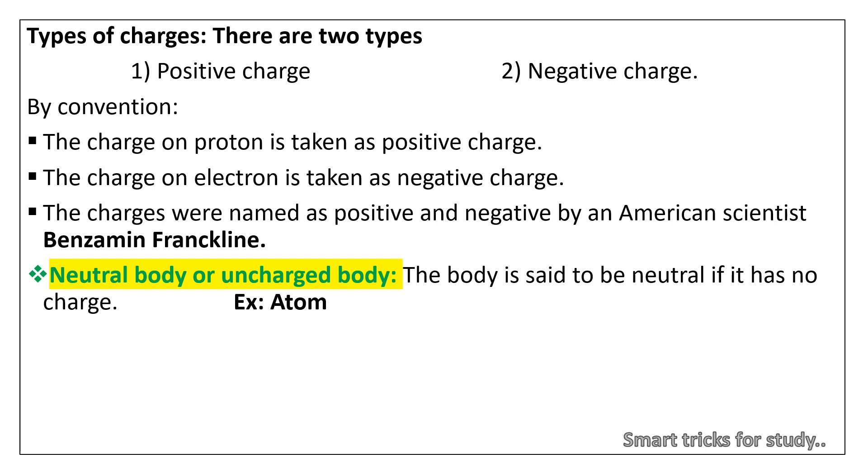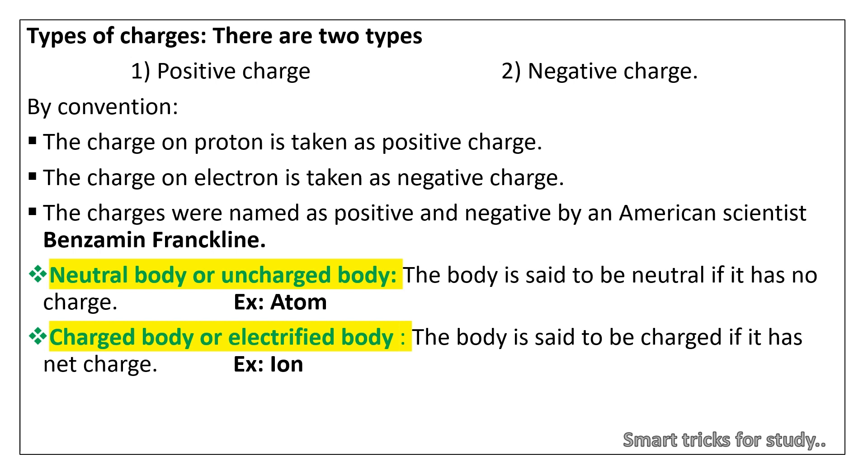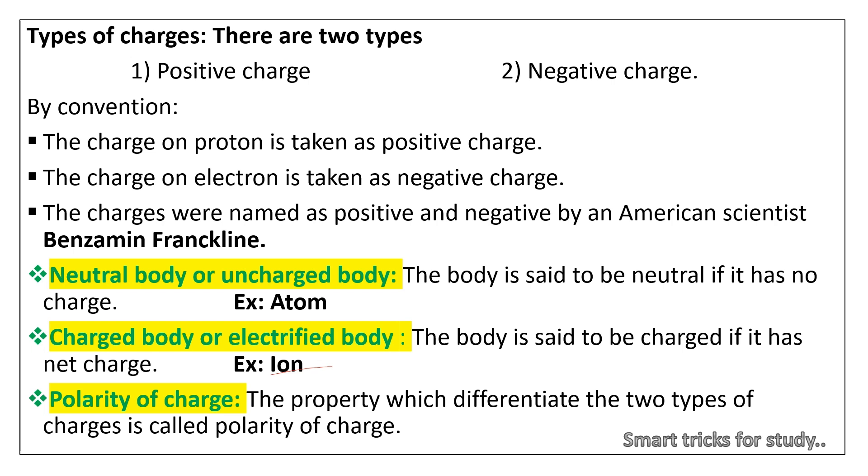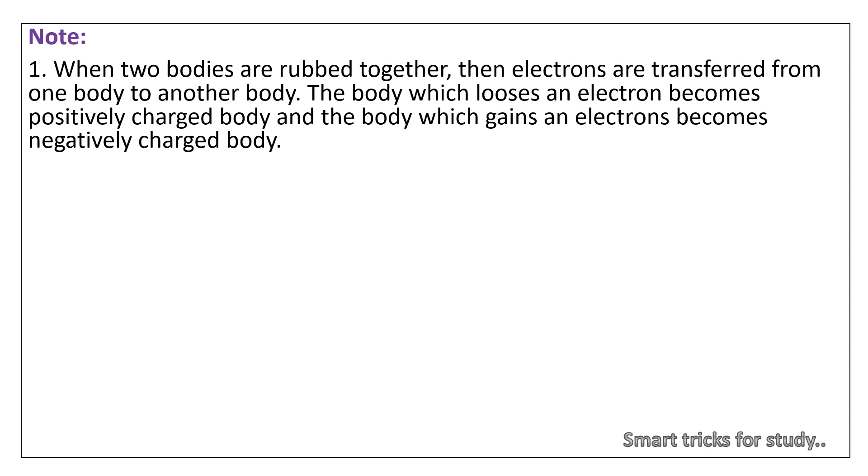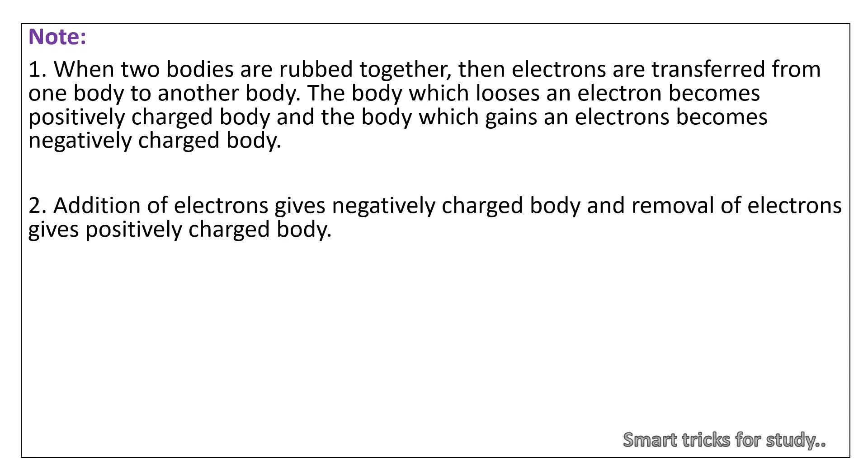Neutral body or uncharged body: the body is said to be neutral if it has no charge, example: atom. Charged body or electrified body: the body is said to be charged if it has net charge, example: ion. Polarity of charge: the property which differentiates the two types of charges is called polarity of charge. Note: When two bodies are rubbed together, then electrons are transferred from one body to another body. The body which loses an electron becomes positively charged body and the body which gains electrons becomes negatively charged body. Addition of electrons gives negatively charged body and removal of electrons gives positively charged body.